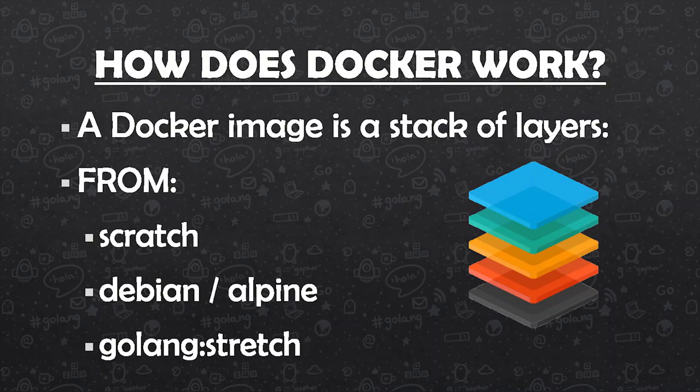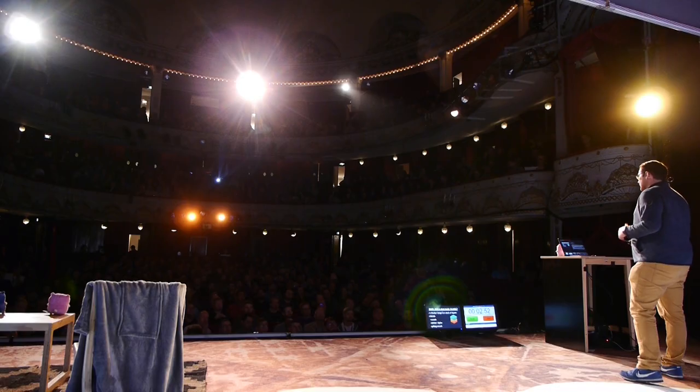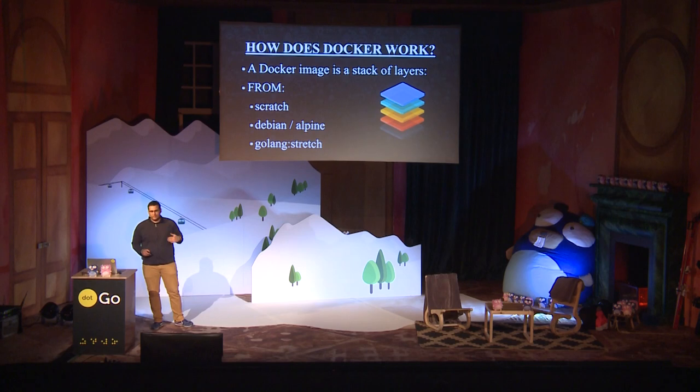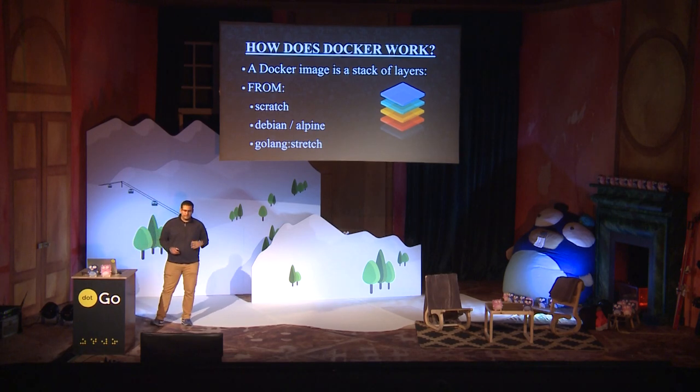In addition, a Docker image works like a stack of layers, where each layer is like an intermediate image. So when you want to build an image for your application, you can start from scratch — from an image that contains nothing. You can start from an image that contains all the dependencies of a Linux distribution, like Debian. Or you can also start from an image that contains all the things of an already set-up environment, like Go.